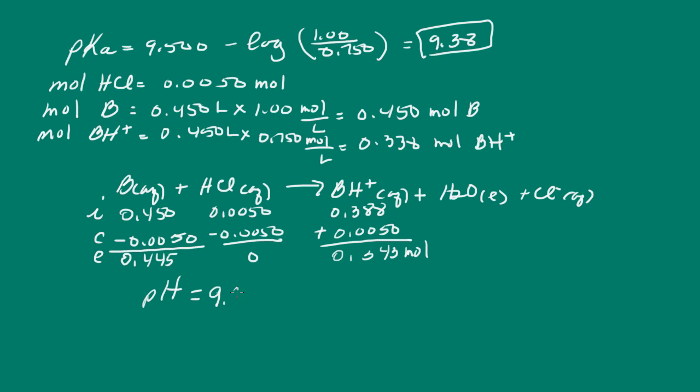So we have pH is equal to pKa plus the log and let's see the number of moles of base. We have 0.445 moles divided by the number of moles of conjugate acid 0.343. And let me calculate that. That's 9.38 plus the log of 0.445 divided by 0.343. The pH is 9.49.